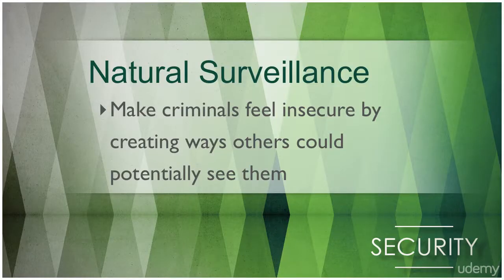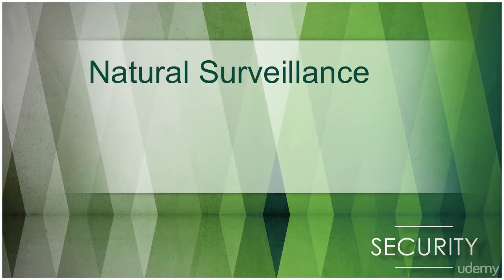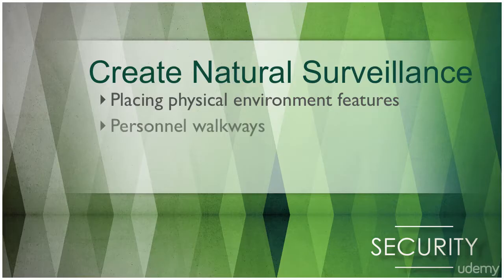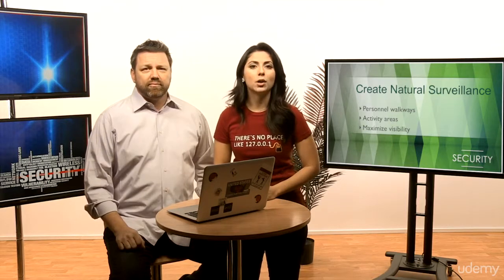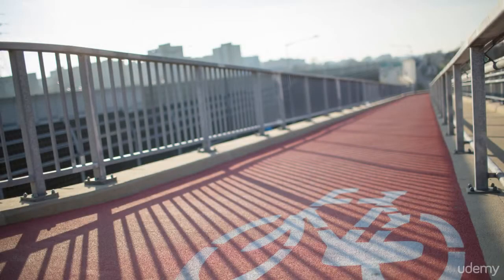The main purpose of natural surveillance is to make criminals feel insecure by creating ways others could potentially see them. This also makes employees feel safe and comfortable by having an open and well-designed environment. We can create natural surveillance by using and placing physical environmental features, personnel walkways, and activity areas in ways that maximize visibility. A stairway in a parking garage should be designed to be open and allow easy observation. Walkways and bicycle paths are designed so that there will be a steady flow of pedestrians who could identify malicious activity.